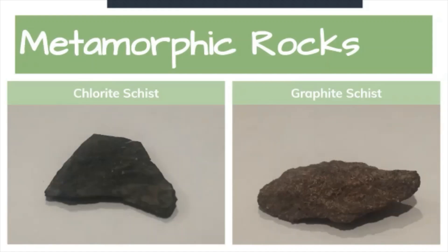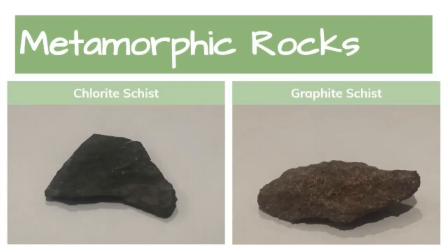First up we have chlorite schist and graphite schist. Schist is a foliated metamorphic rock made up of plate-shaped mineral grains large enough to see with the unaided eye, usually forming on the continental side of a convergent plate boundary. These rocks are similar in how they were formed but contain different minerals — one has chlorite and one has graphite. Many valuable gems such as rubies, emeralds, and sapphires form in schist rocks.